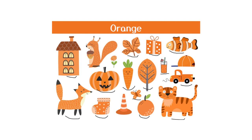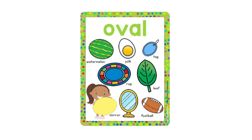Now we are going to move to our next lesson. It is about the oval shape. Everybody repeat with me: oval shape. Here we have some objects that have the oval shape. Look at the first picture.